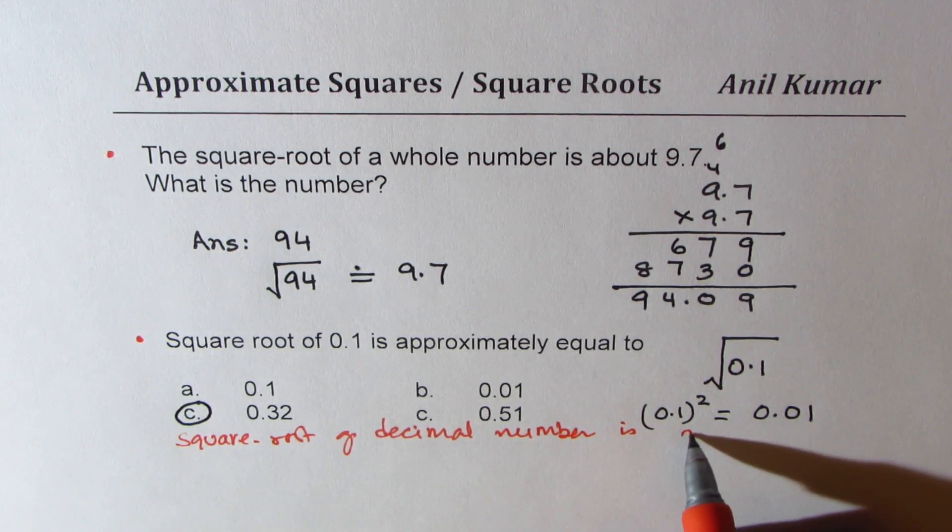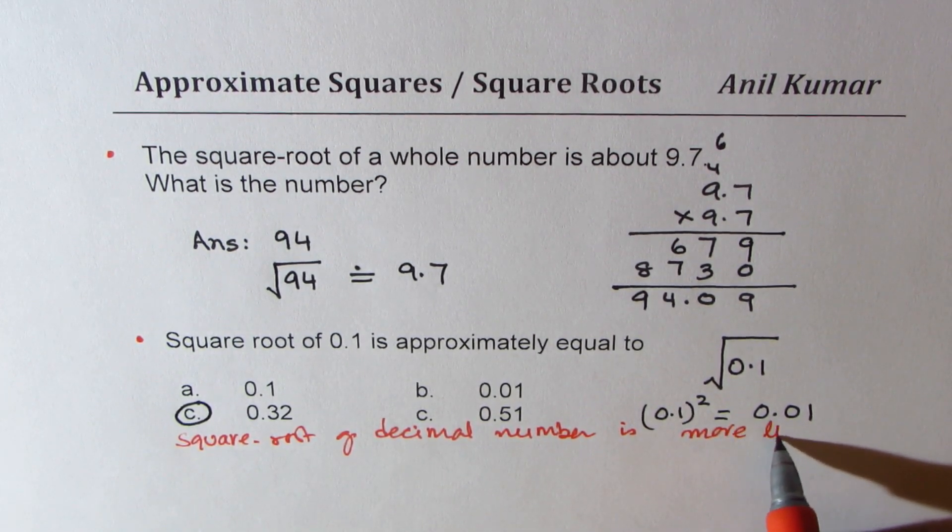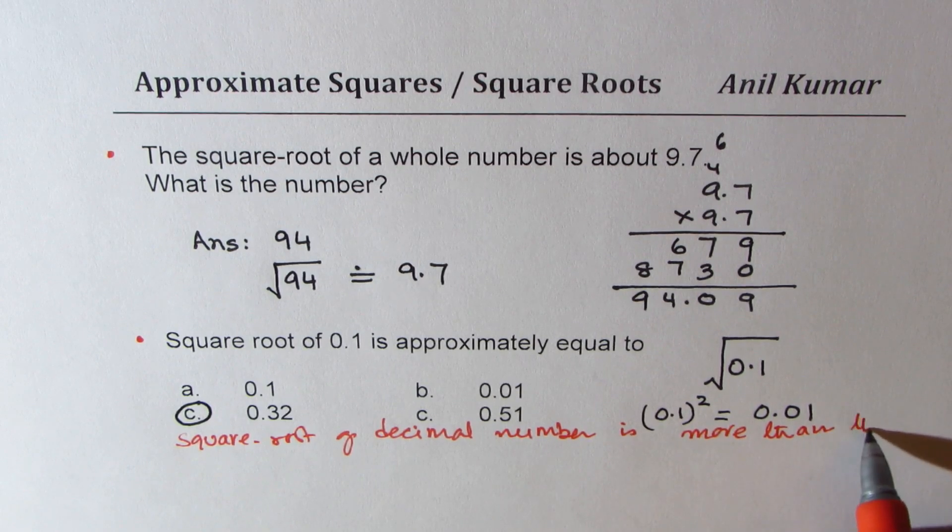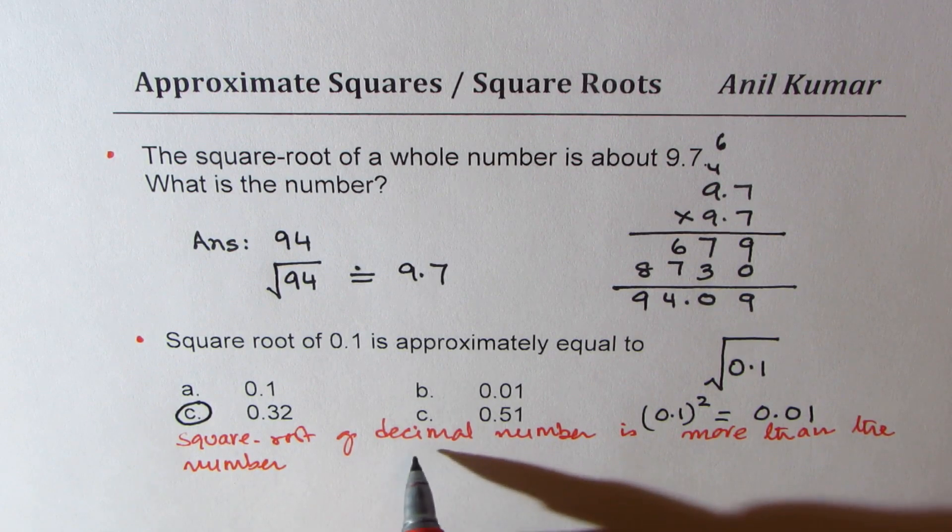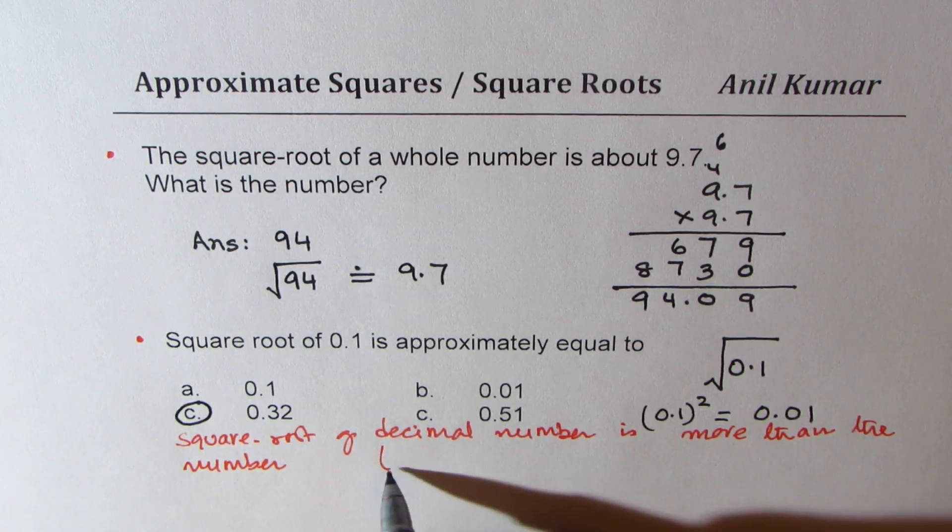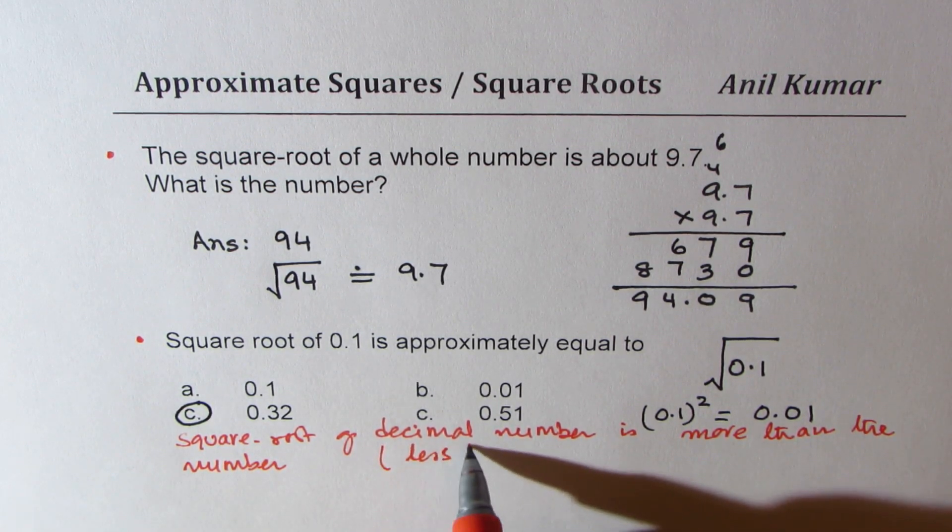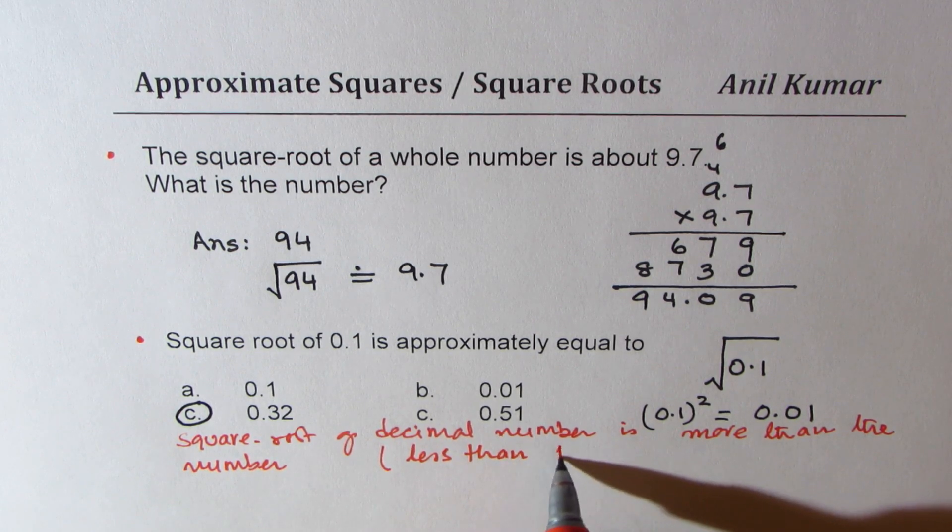is more than the number when we say decimal number. That means we are saying less than 1.